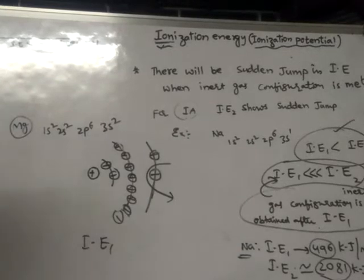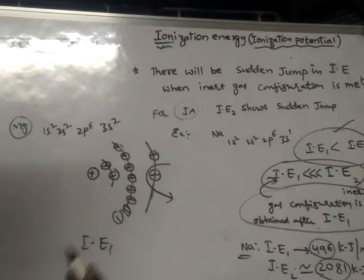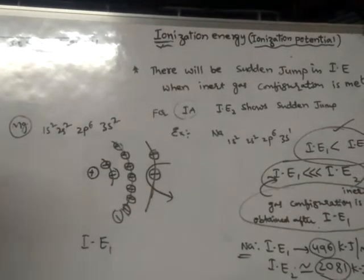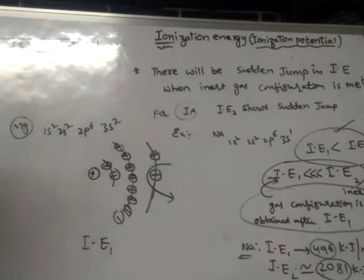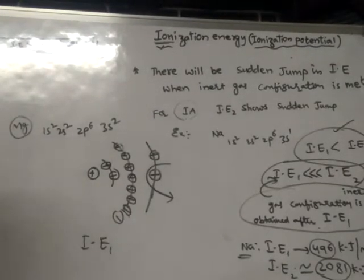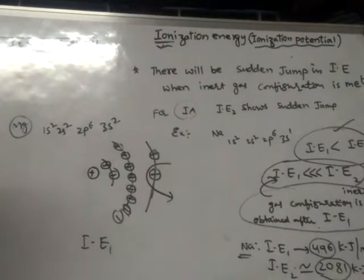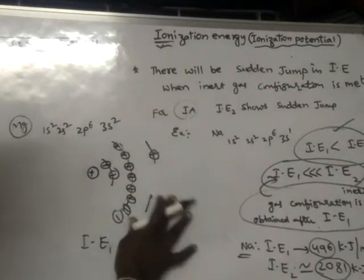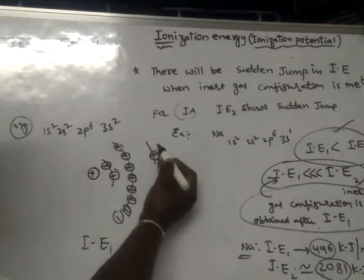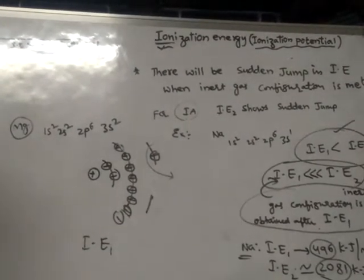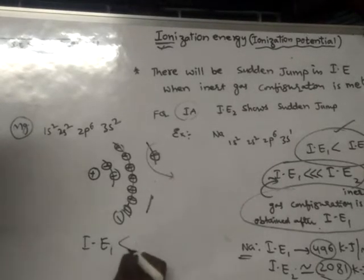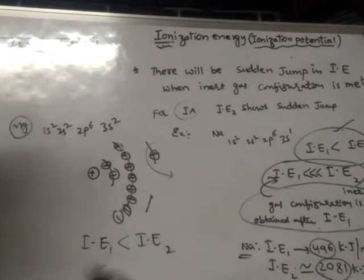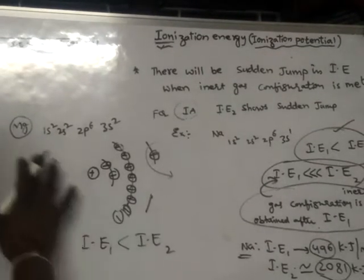Always, only the electrons from the outermost orbit can be removed; electrons from the inner orbits cannot be removed because they are closer to the nucleus and strongly attracted by it. Outermost orbit electrons are far away and can be removed more easily. After spending the first ionization energy, I remove that electron, and then by spending the second ionization energy, I remove the second electron.